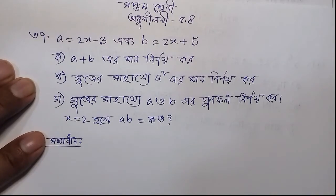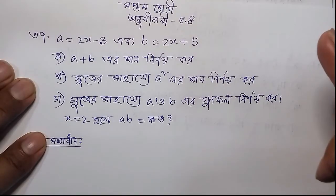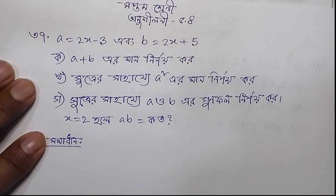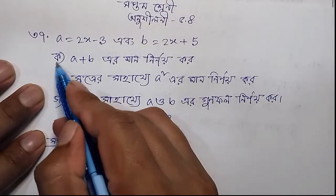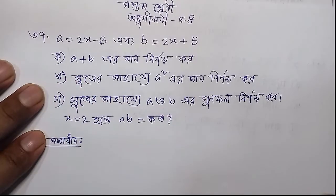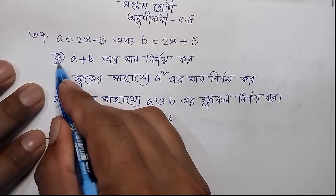Assalamualaikum. Welcome everyone, I hope you are all well. Today we have problem number 5.4. This is question number 3: given a is equal to 2x minus 3 and b is equal to 2x plus 5. Based on this, we will solve the following problems.